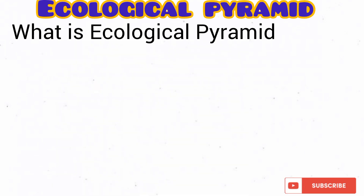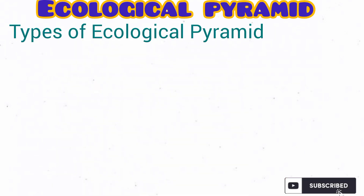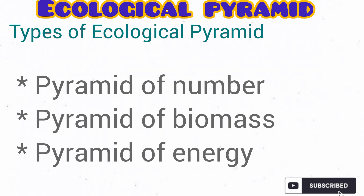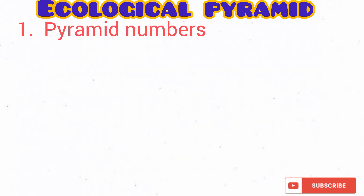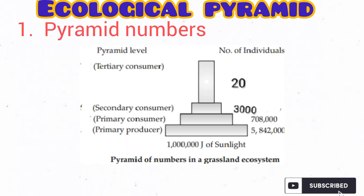Let's take a look at the types of ecological pyramids. The three types of ecological pyramids are pyramid of numbers, pyramid of biomass and pyramid of energy. The pyramid of numbers shows the number of organisms in each trophic level in a food chain or in an ecosystem.